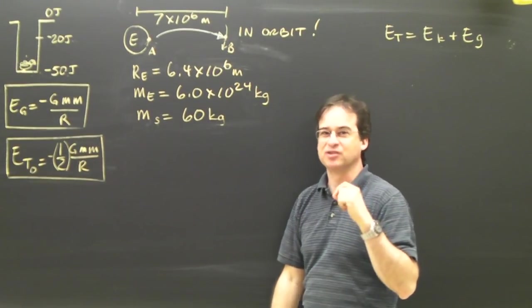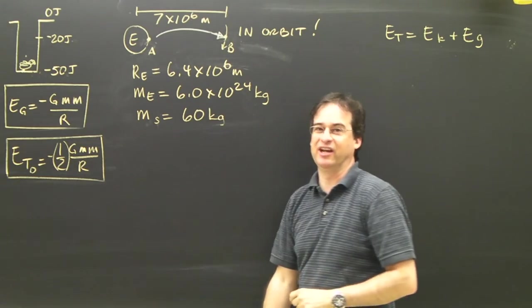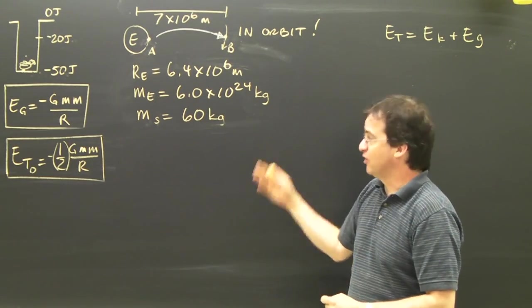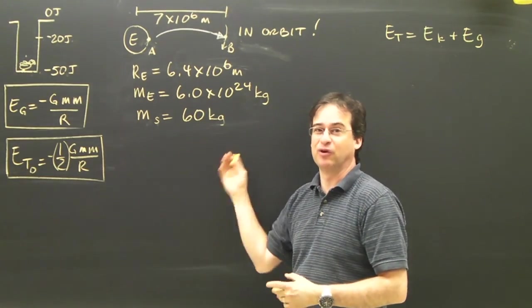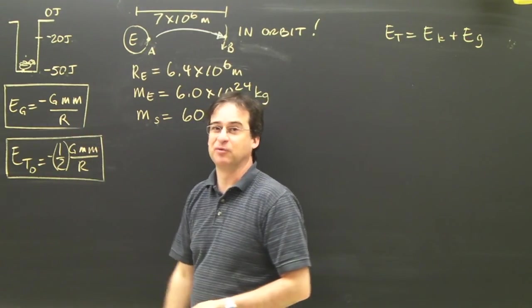As I've said a number of times, if you want to know how fast something is going, you need to know what the kinetic energy is. It works out that it's very simple for objects in orbit. Gravitational energy has a very simple formula.